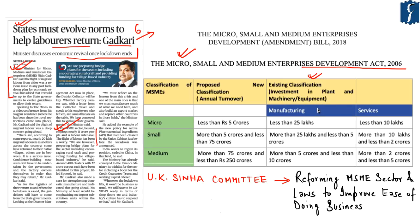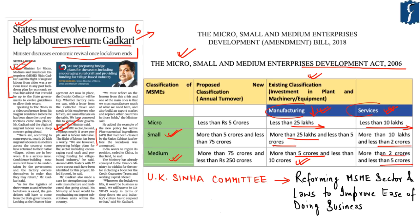The 2006 Act differentiates the MSME sector with respect to manufacturing industries and the services sector. For manufacturing, micro industries have investment less than Rs 25 lakhs; for services, it is less than Rs 10 lakhs. For small industries in manufacturing, investment is more than Rs 25 lakhs and less than Rs 5 crores; for services, more than Rs 10 lakhs and less than Rs 2 crores. For medium enterprises in manufacturing, it is more than Rs 5 crores and less than Rs 10 crores; for services, more than Rs 2 crores and less than Rs 5 crores.